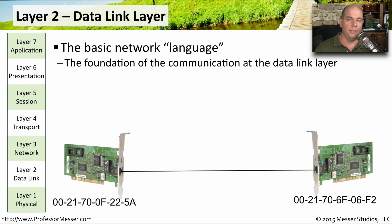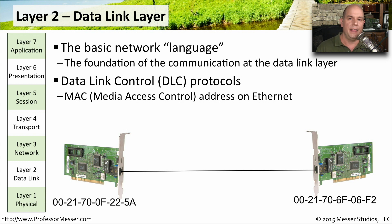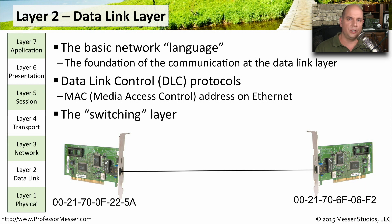Layer 2 is the data link layer. This is where we start talking about sending data blocks from one side of the network to the other. We often refer to these as data link control protocols, or DLC protocols. For instance, on Ethernet we are always referring to the MAC address of an Ethernet device. That media access control address works at layer 2, the data link layer of the OSI model. We'll sometimes refer to layer 2 as the switching layer, because switches make their forwarding decisions based on the destination MAC address inside of an Ethernet frame.